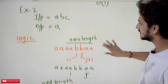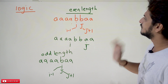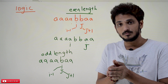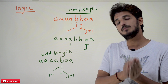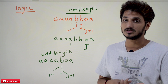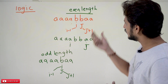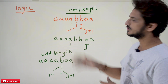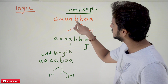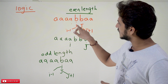Now coming to the logic — the logic is very simple to understand. Whenever you are going to identify a palindrome, it may be an even length palindrome or it may be an odd length palindrome. In our logic, we have to check for both the conditions — even length and odd length palindromes. For even length, how are you going to check?